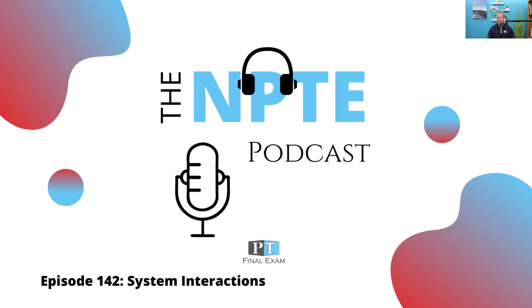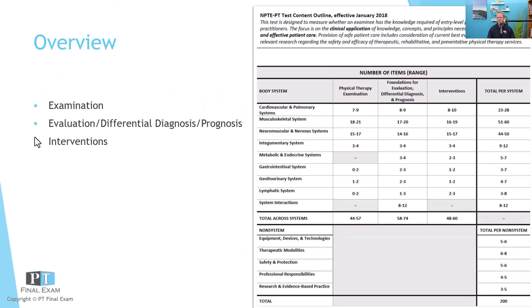Let's dive into our practice question. On this section of the exam, you can expect somewhere between eight and twelve questions, and a lot of it is related to evaluation, differential diagnosis, and prognosis. When you consider system interactions, we're talking about — in our case today — diabetes. Other examples would be dementia or Alzheimer's disease related to hip fracture, incorporating multiple systems like the neurosystem and the musculosystem. The key with system interactions is understanding the interplay between these things.